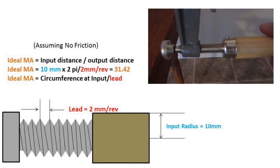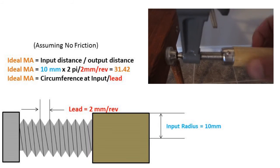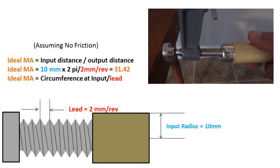Now to calculate the mechanical advantage, we can take the input displacement at the wooden knob of 10 millimeters times 2 pi, this is the circumference, and divide that by the output distance of 2 millimeters, or lead distance.